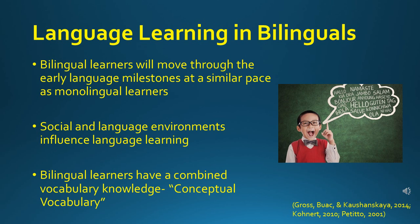Any differences between their two languages can be attributed to differences in the child's social and language environments. Our environment has a strong influence on children's learning and development. For example, a child may know the word 'rice' because she and her family ate rice every night and she frequently heard the word, but the child may not know the word 'pizza' because she was never exposed to that type of food or that word.